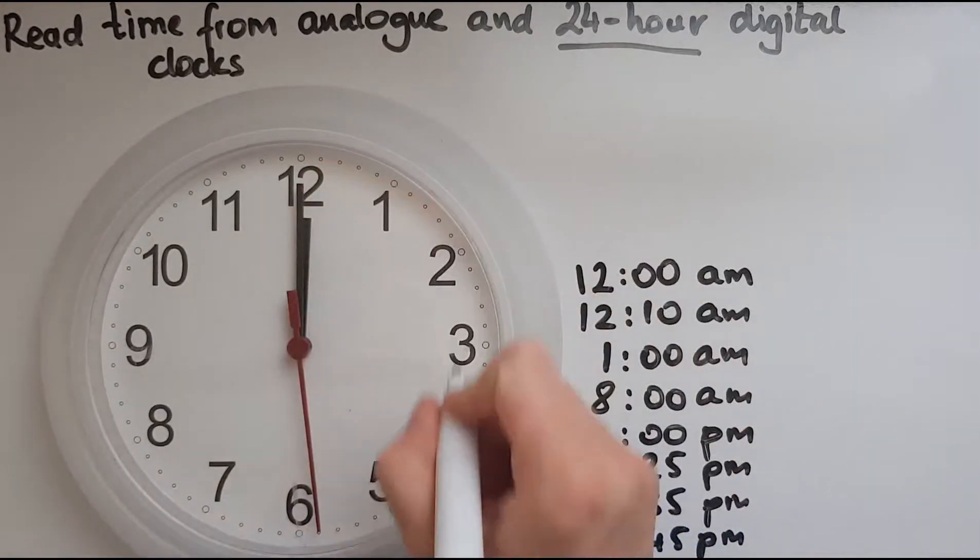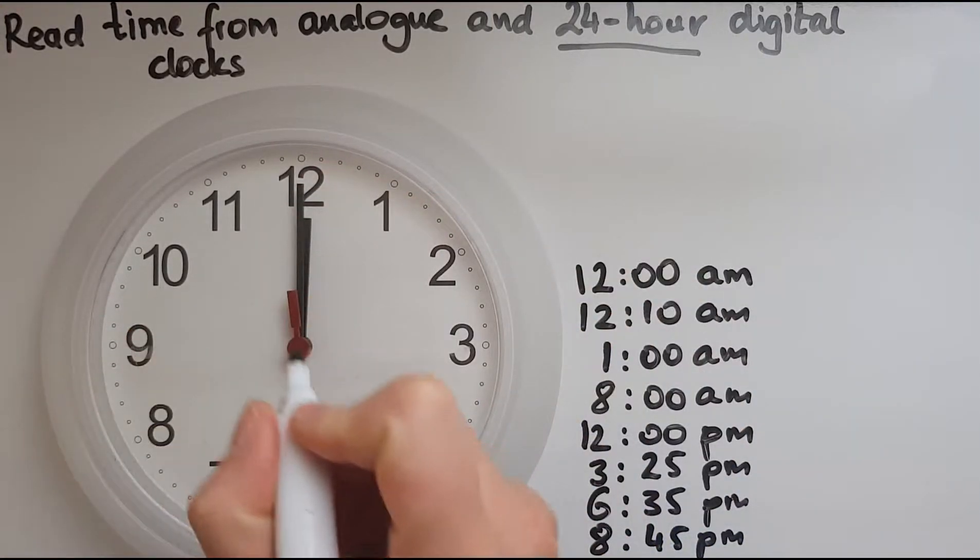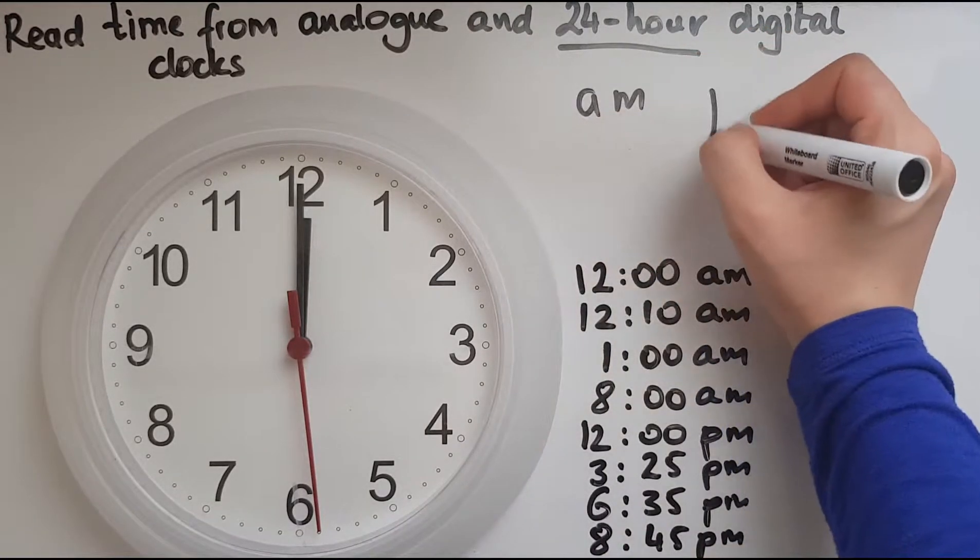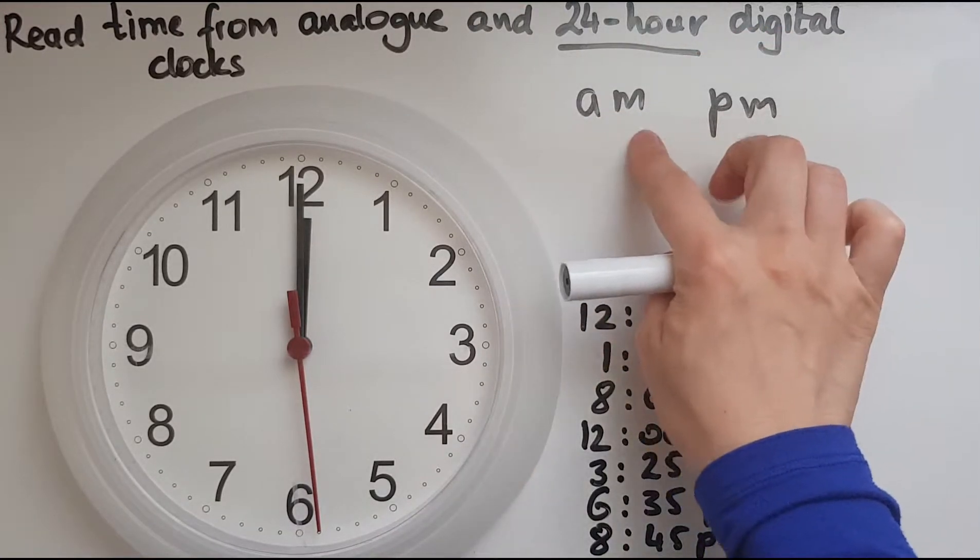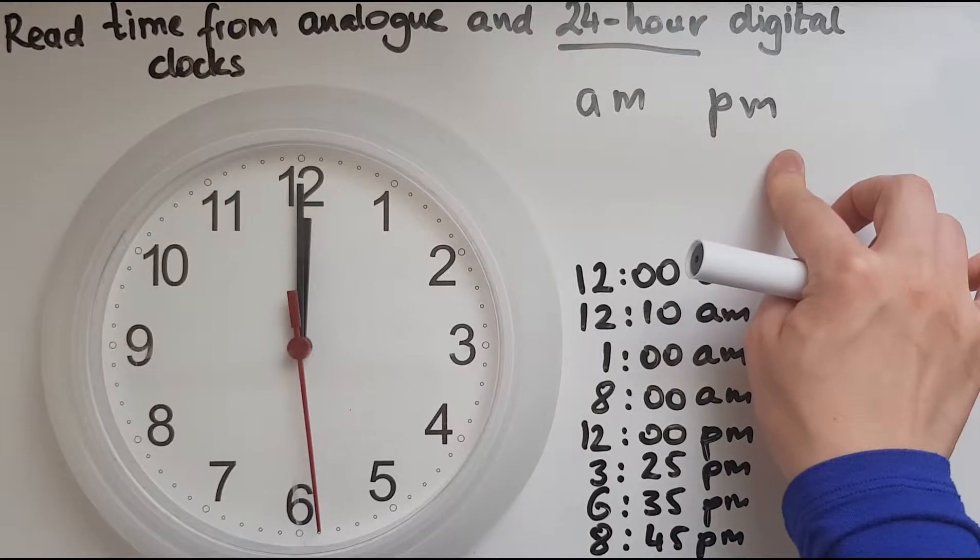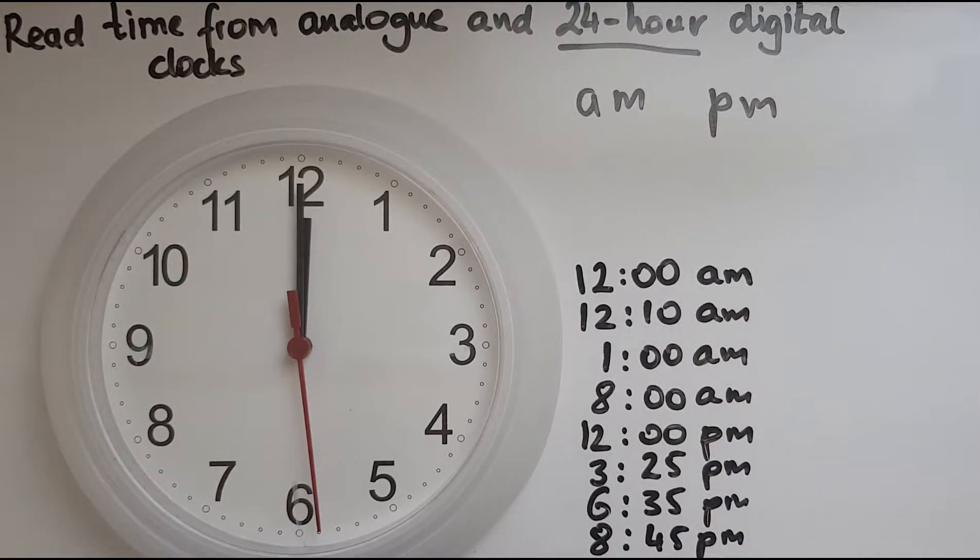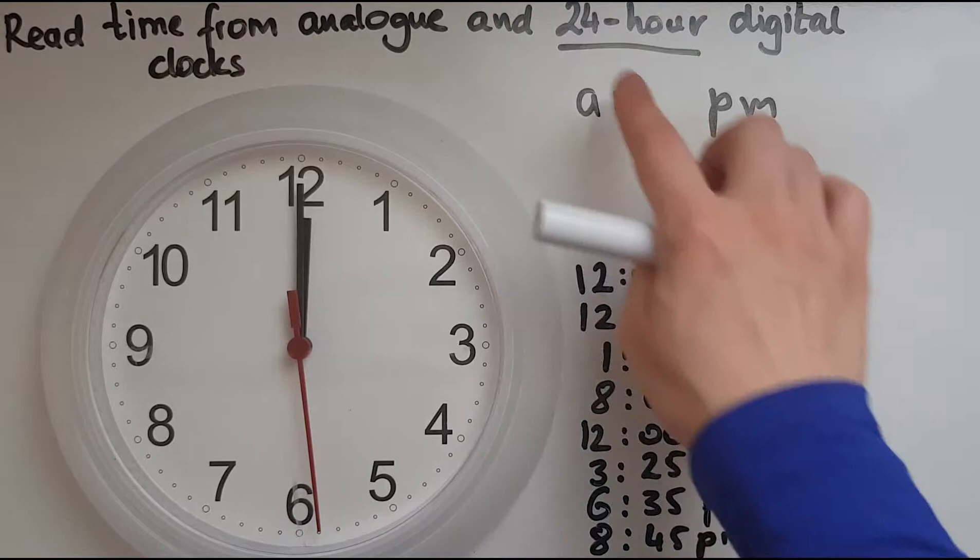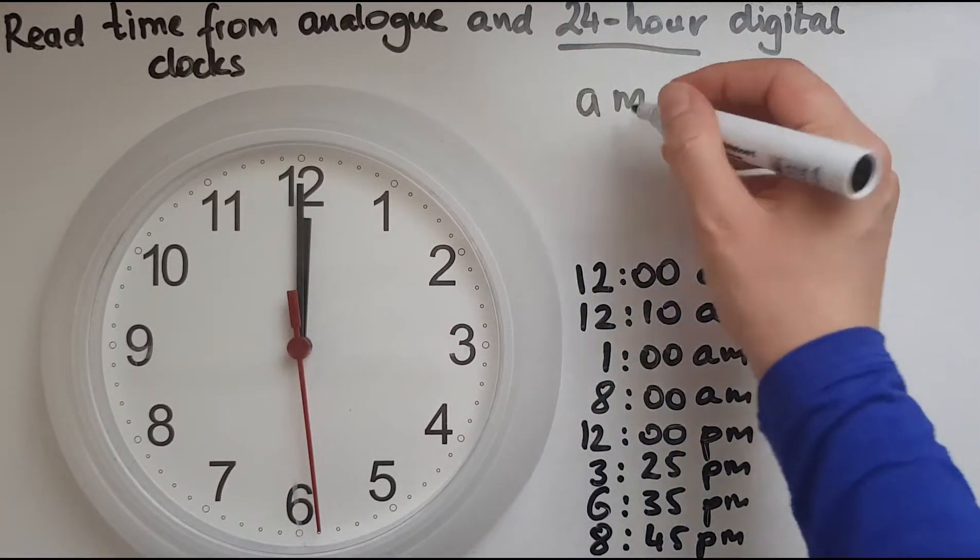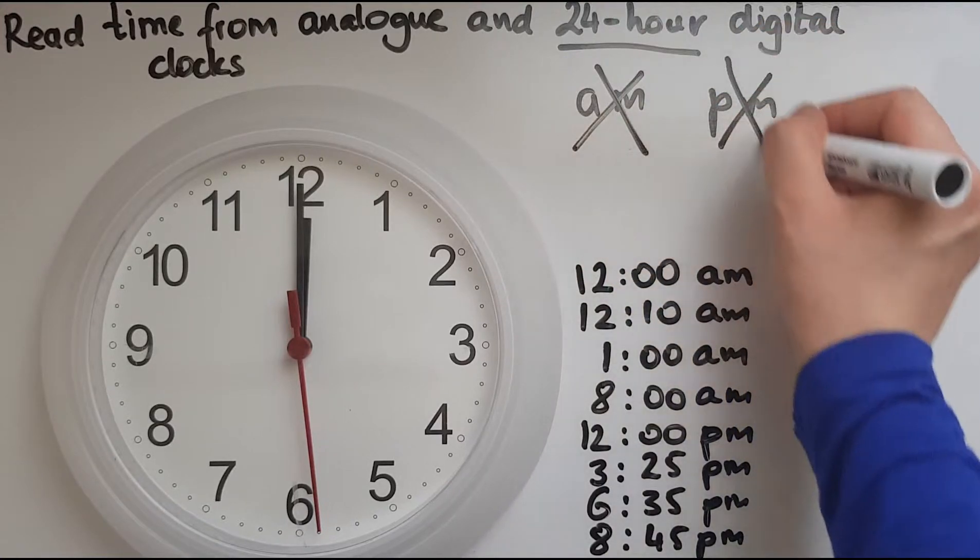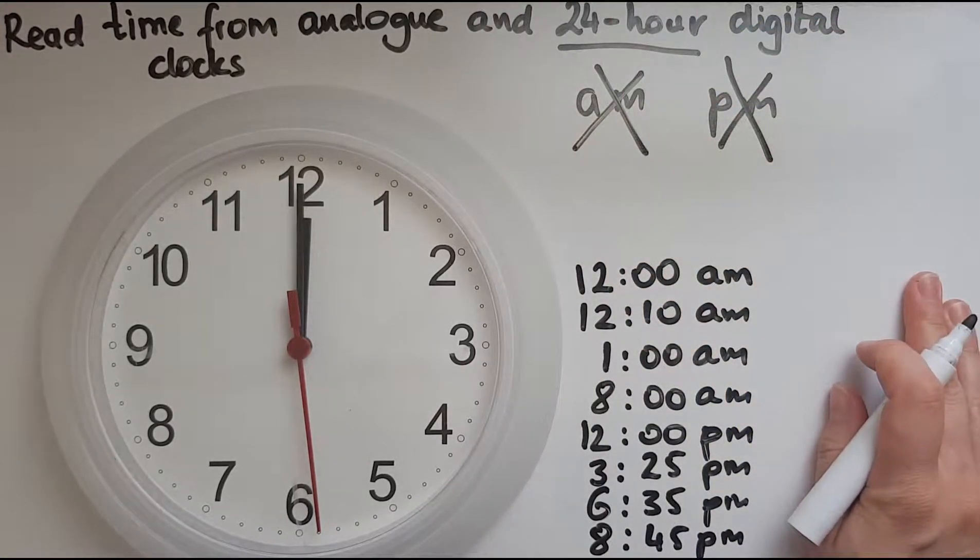When we looked at the 12-hour format we had a.m. for the morning and p.m. for the afternoon. I've got the examples here from the previous video. Next to these I'll do the 24-hour digital clocks, because in the 24-hour format we don't use a.m. or p.m.